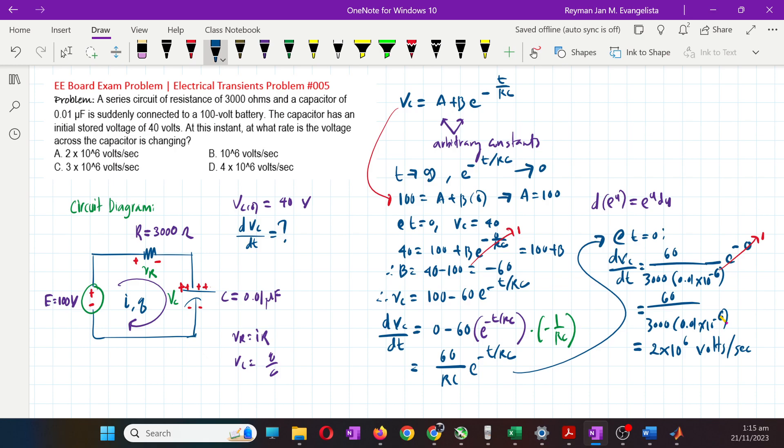So 2 times 10 raised to 6 volts per second is letter A. Now what did you notice? For this type of problem, the shortcut is - usually they don't give this kind of problem by inspection. Based on this solution, you'll see that the rate of change of voltage across the capacitor when t is 0 is obviously equal to E minus Vc sub 0 over RC.